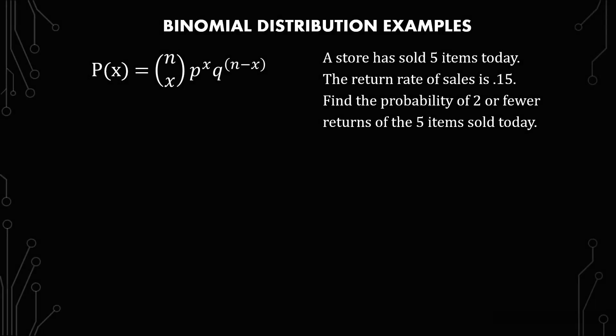A store has sold five items today. The return rate of sales is 0.15. Find the probability of two or fewer returns of the five items sold today.